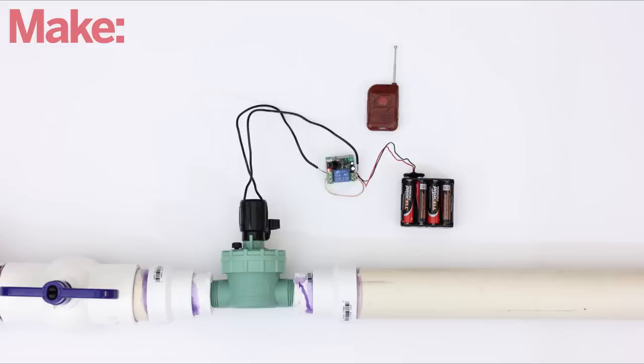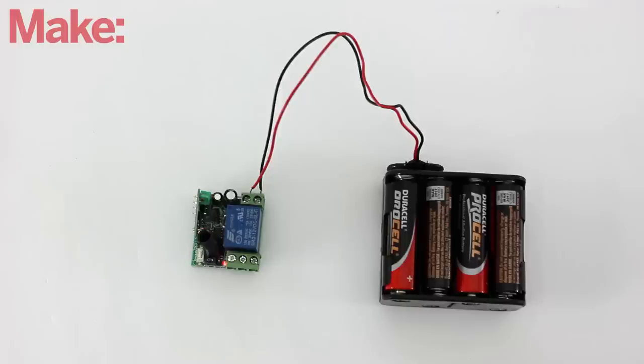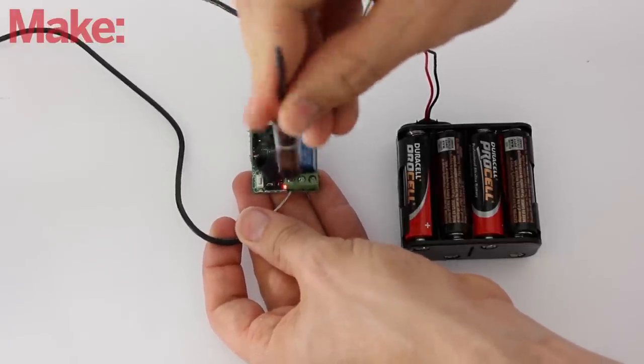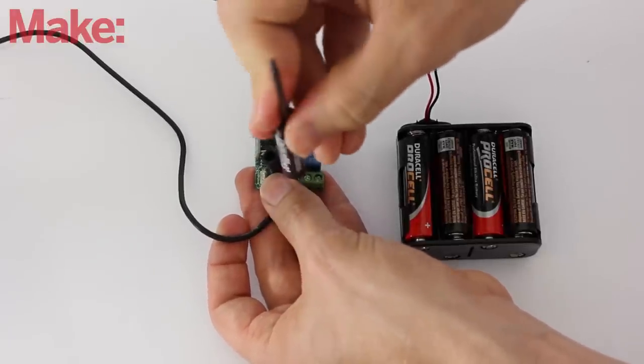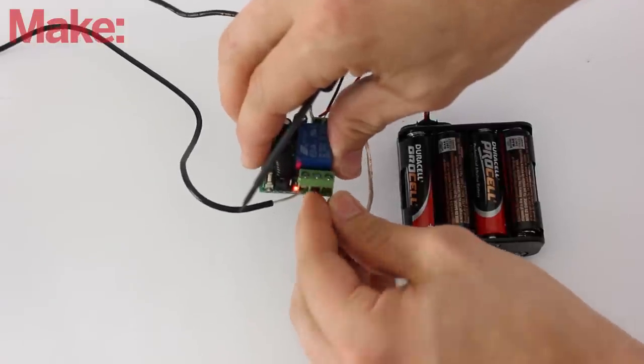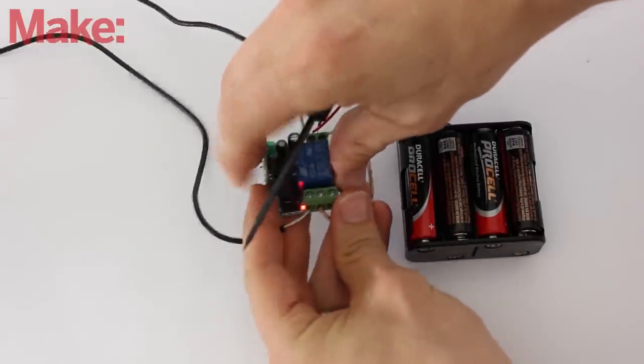The last part to add is the control circuit. Start by connecting the remote controlled relay circuit to a 12 volt battery pack. Connect one wire from the sprinkler valve to the positive power terminal and connect the other wire to the normally open terminal on the relay. Lastly, add a jumper wire between the negative power terminal and the common terminal on the relay.